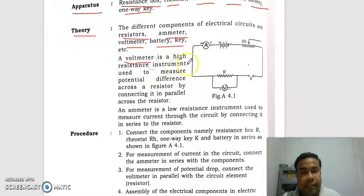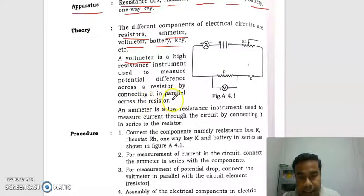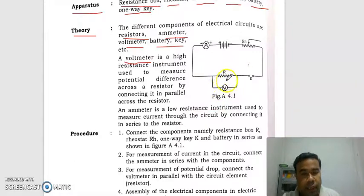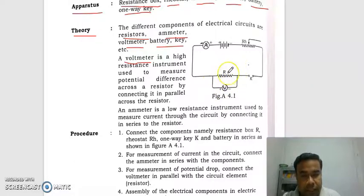A volumeter is a high resistance instrument used to measure potential difference across a resistor by connecting it in parallel across the resistor. As I said, volumeter is always connected in parallel because it is a high resistance device, so it is connected in parallel to the resistor as shown in figure.